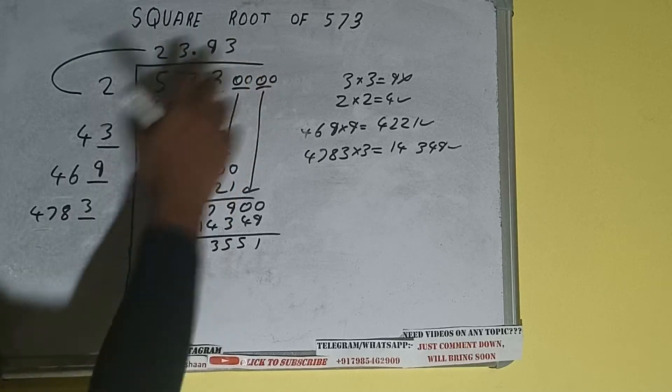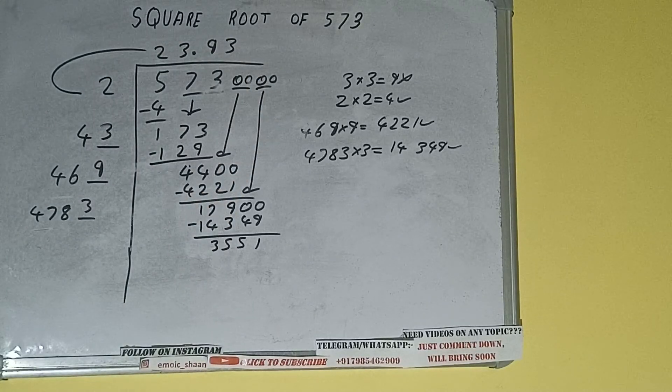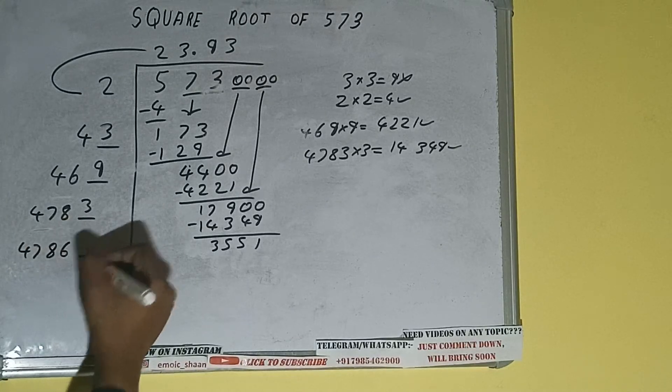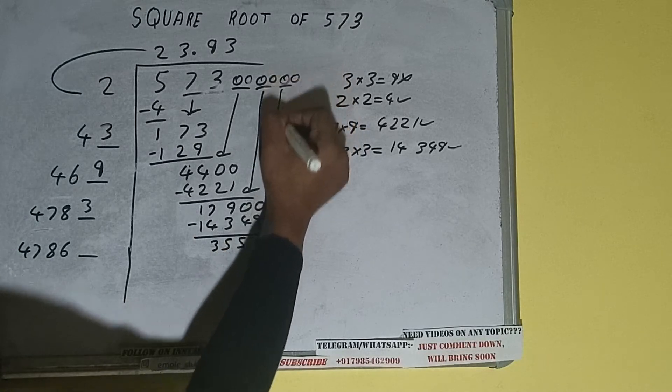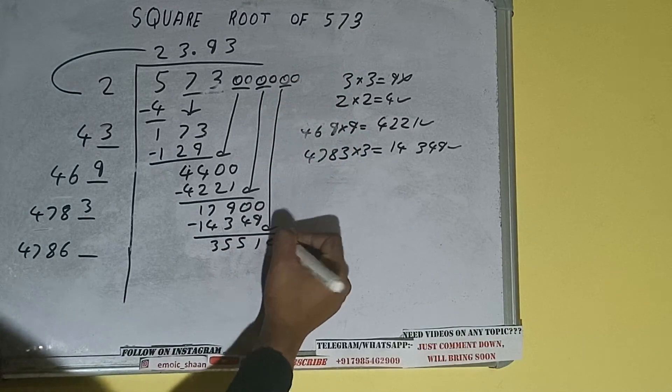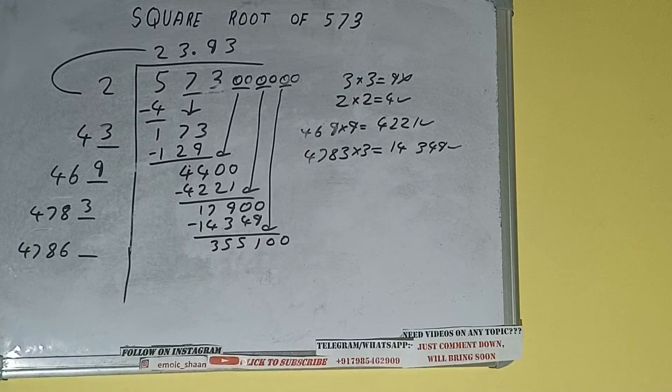Now 4783 into 3 we did, so add both. 4783 plus 3 will be 4786 and one digit extra. And this number we need to make it big. So bring the next pair of zeros down and it will be 355100.